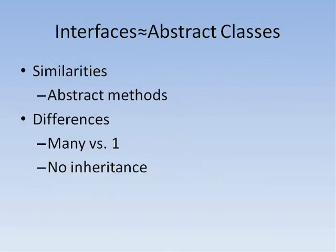An interface might remind you of an abstract class. It is similar. Interfaces, like abstract classes, can have abstract methods that other classes are forced to implement. But while a class can only have one parent class, it can implement as many interfaces as it wants.